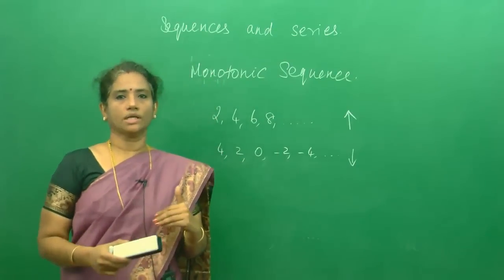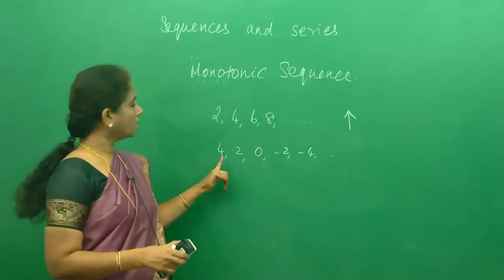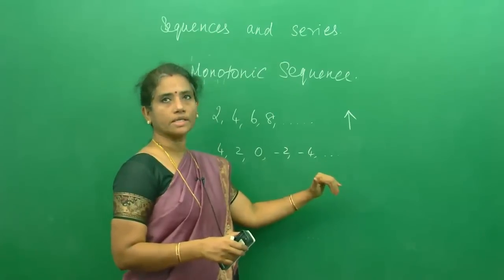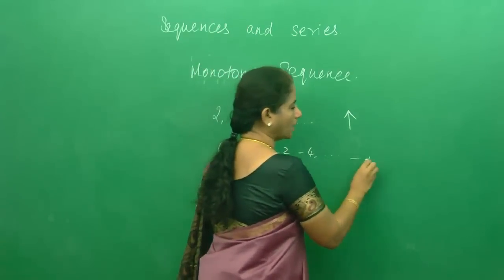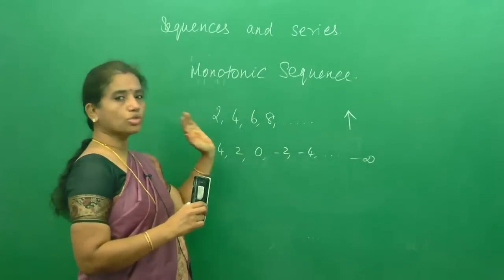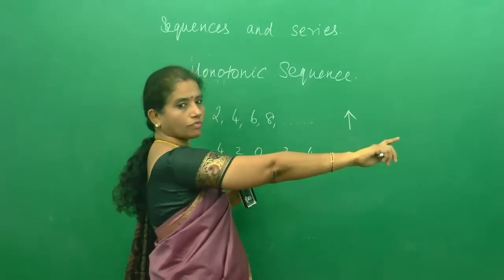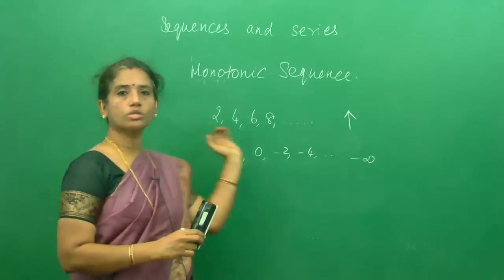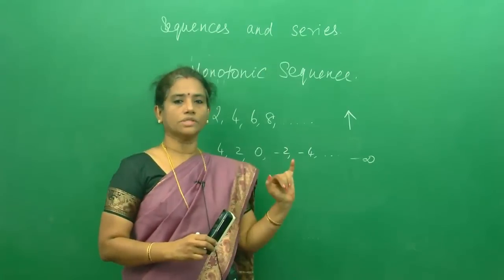By common sense, monotonic increasing sequences will be divergent because the terms go on increasing. And monotonic decreasing sequences will be converging sequences because the terms go on decreasing — so it will be convergent for a particular value. But looking at the sequence 4, 2, 0, -2, -4, etc., the terms go on decreasing but this goes up to negative infinity. So this is again diverging. Whether the sequence goes to positive infinity or negative infinity, we call it divergent.